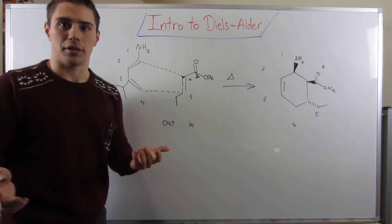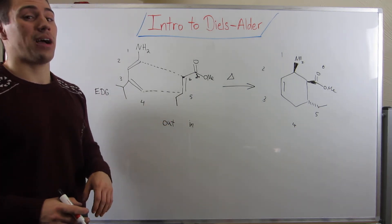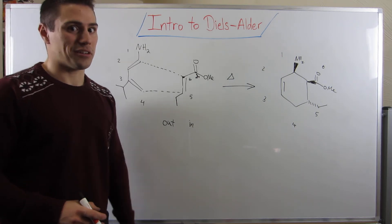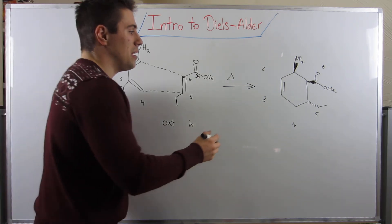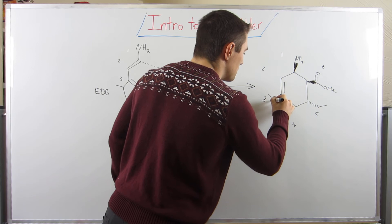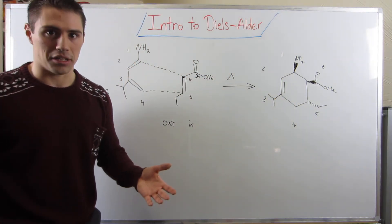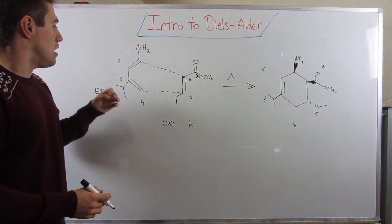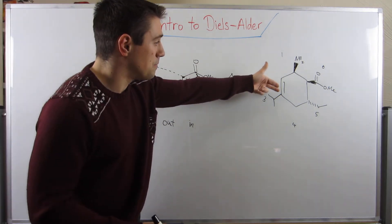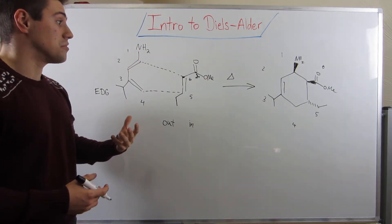What's the isopropyl group's stereochemistry? Hopefully you're thinking there is no stereochemistry - because at position three, this carbon is sp2 hybridized. This carbon right here is planar. There is no stereochemistry. So if you ever get a substituent at position two or three like this, that's because there is no stereochemistry at that sp2 carbon.